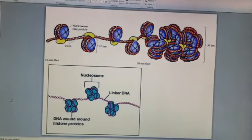Now they're wrapped around histone proteins, and the DNA wrapped around a histone protein forms something called a nucleosome. Now the DNA between nucleosomes is called linker DNA.